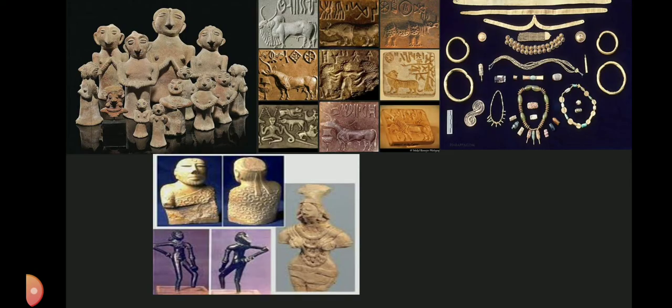Terracotta Images: Terracotta refers to the art of clay sculpting. The Indus Valley people also made terracotta images, but compared to stone and bronze statues, the terracotta representations of human forms are more numerous. The most important Indus figures include those representing the mother goddess, mask of horned deity, toy carts with wheels, rattles, birds and animals, and gamesmen and discs rendered in terracotta.